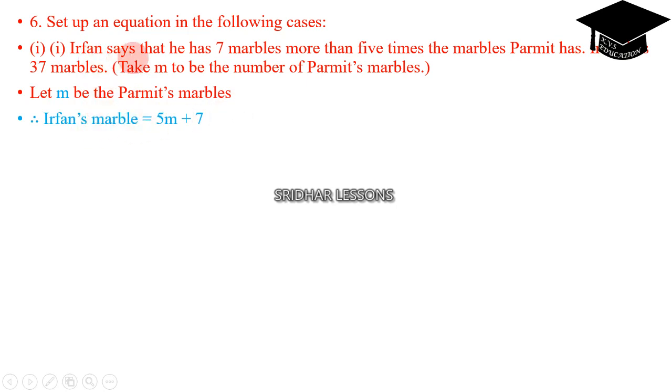Therefore, Irfan's marbles are 5M plus 7, because he has 7 marbles more than 5 times. That means 7 plus 5M, or we can write it as 5M plus 7. The total number of Irfan's marbles is 37, which is given here. So the required equation is 5M plus 7 equals 37.